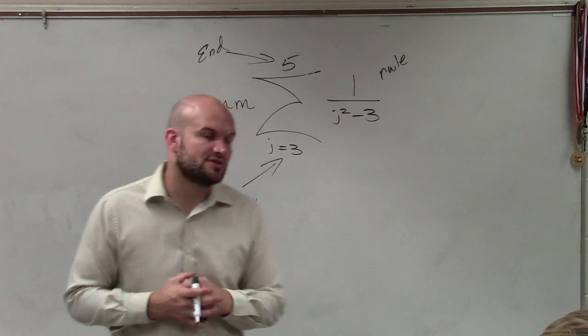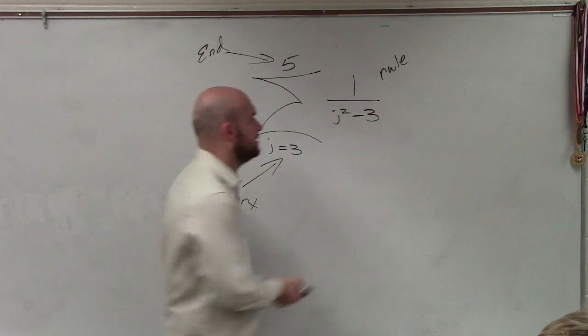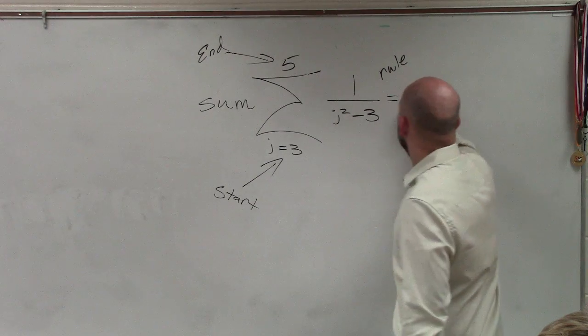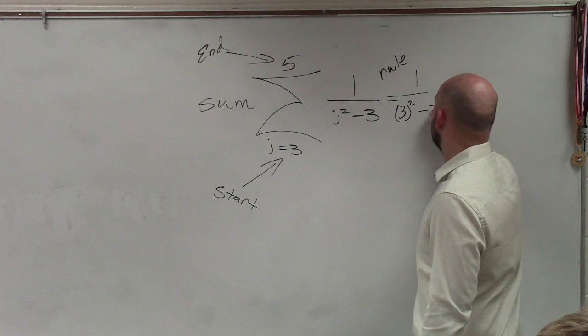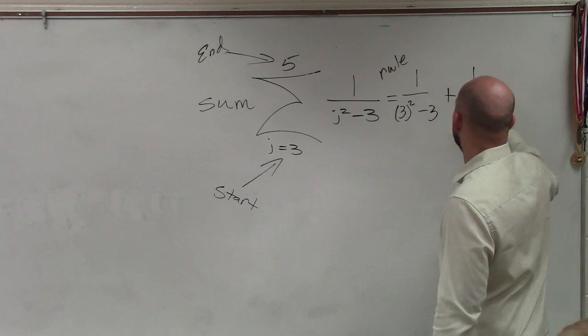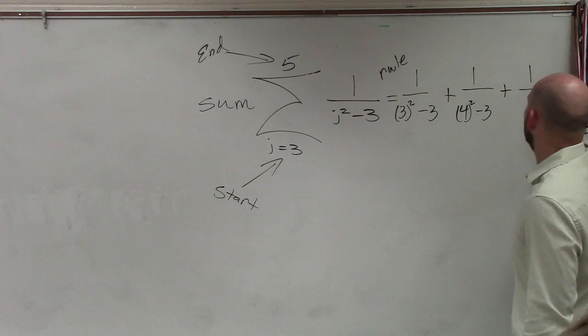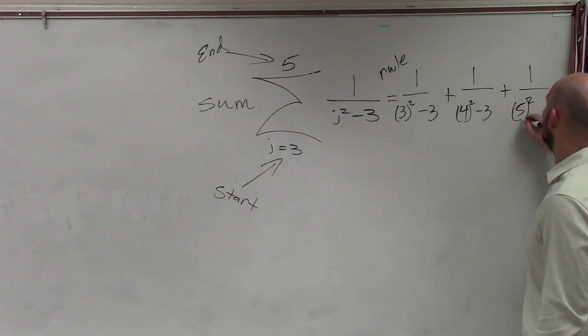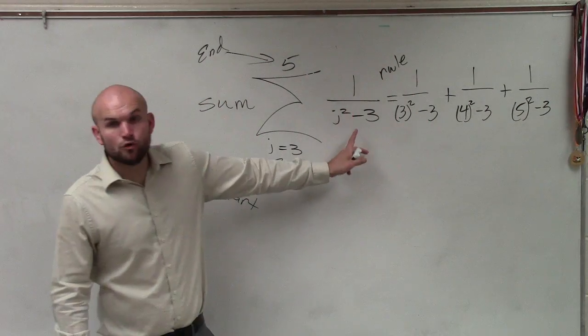So what we're going to do now is just plug in our values into the formula or into the rule. So I have 1 over 3 squared minus 3 plus 1 over 4 squared minus 3 plus 1 over 5 squared minus 3. Can you explain it? What happened to 1 and 2?